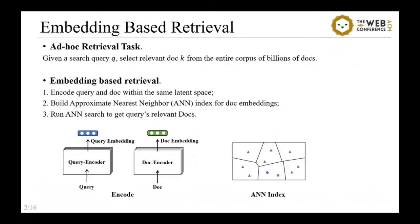Ad-hoc retrieval is important for today's online applications. In response to each input query, the system needs to select the appropriate document from the entire corpus. Nowadays, the Embedding-Based Retriever has become a promising solution, where deep-learning-based document representation and approximate nearest-neighbor search tactics are jointly used to handle this problem.